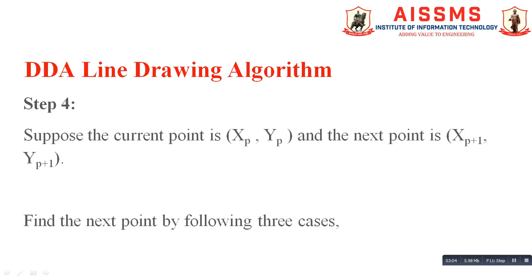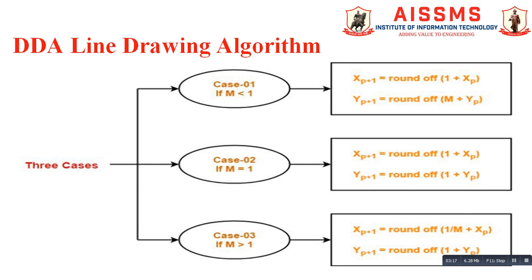We denote the current point coordinates as (xp, yp) and the next point coordinates as (xp+1, yp+1). Based on the value of slope m there are three conditions. The first condition is when the value of slope is less than 1. In this case, the x-coordinate of the next point is calculated as round(1 + xp), where xp is the x-coordinate of the current point, and the y-coordinate of the next point is calculated as round(m + yp), where m is the slope and yp is the y-coordinate of the current point.